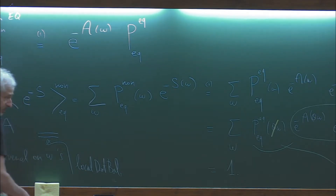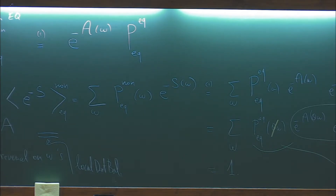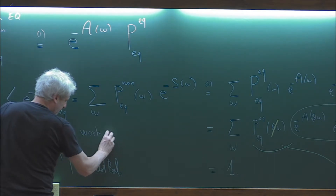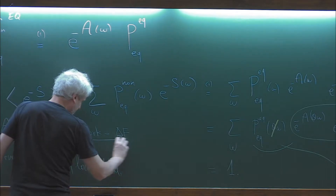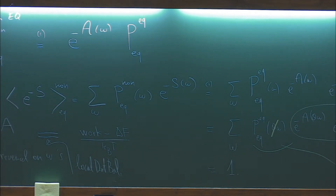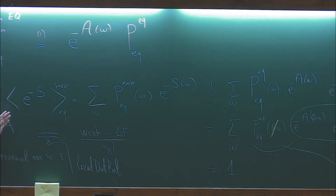Suppose that I have non-equilibrium because I have detailed balance dynamics but changing in time. Then what is dissipated is just the work minus the change in free energy divided by k_B T. Plug that into this formula, and this is what is called the work-free energy relation that you saw yesterday. That's just to make it clear how this formalism fits with what you heard in the talk of Chris Jarzynski. Here I do not use any large deviations—this is valid for every time.